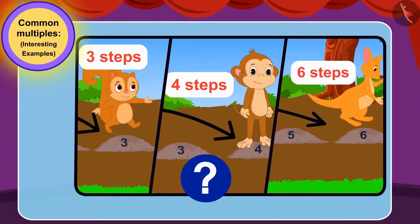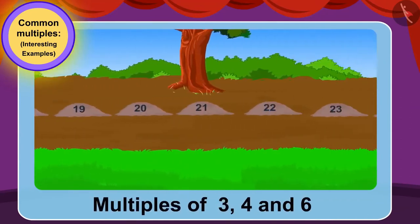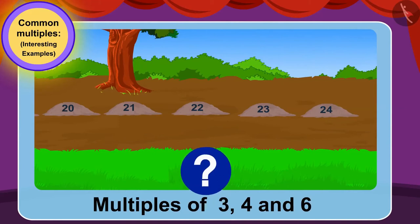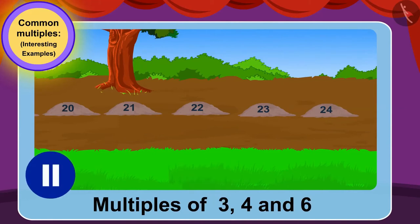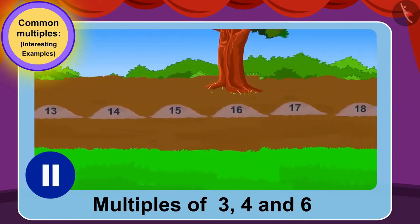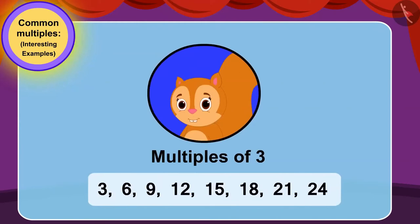Let's see how we can find this. We have to first find out which stones the three friends will jump on. We will find multiples of three, four, and six up to twenty-four. Can you figure it out? If you want, you can stop the video and find the answer. Well done, children! You have found the right answer. Chanda will jump on stones 3, 6, 9, 12, 15, 18, 21 and 24.